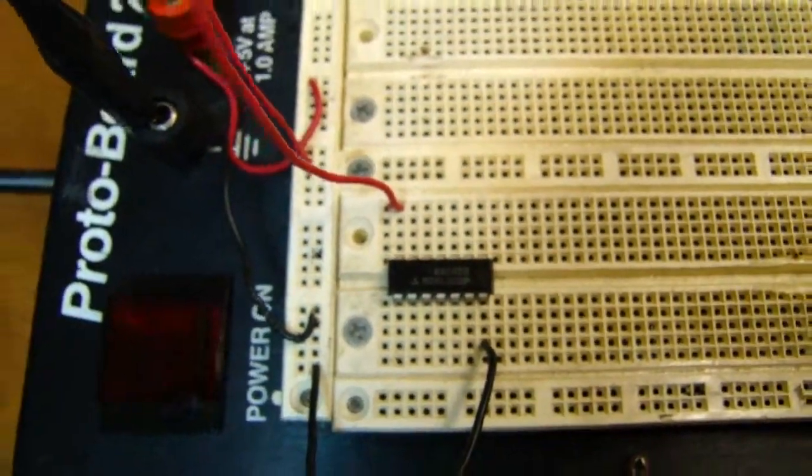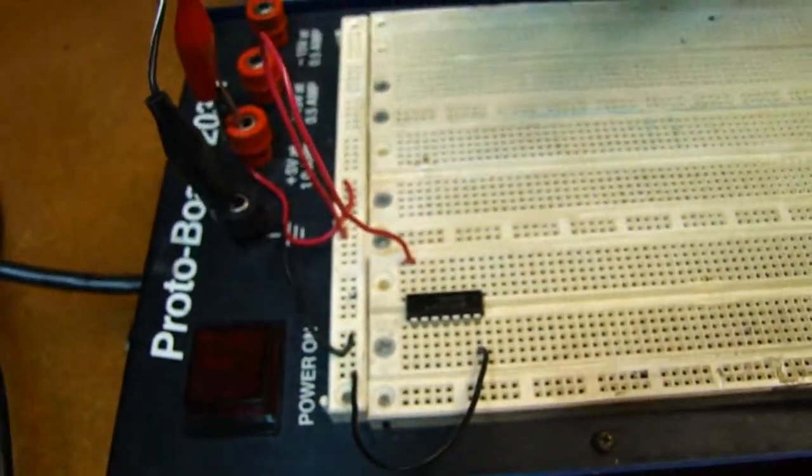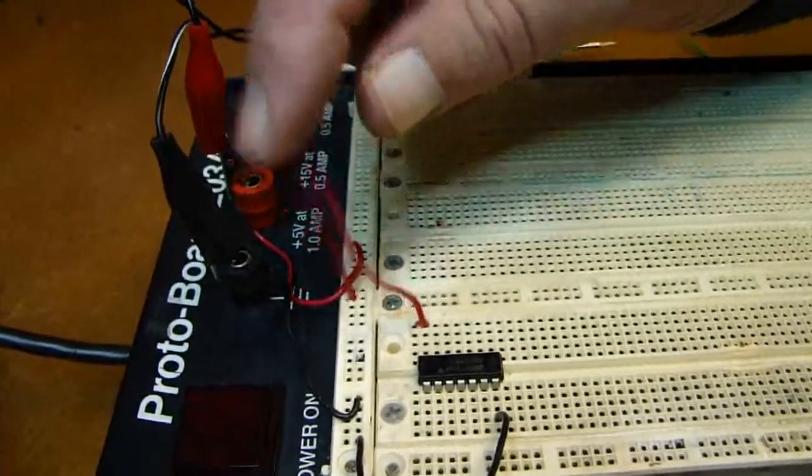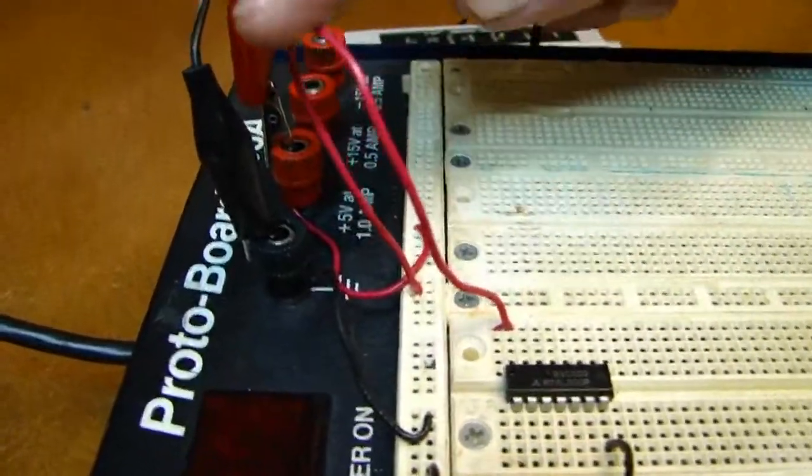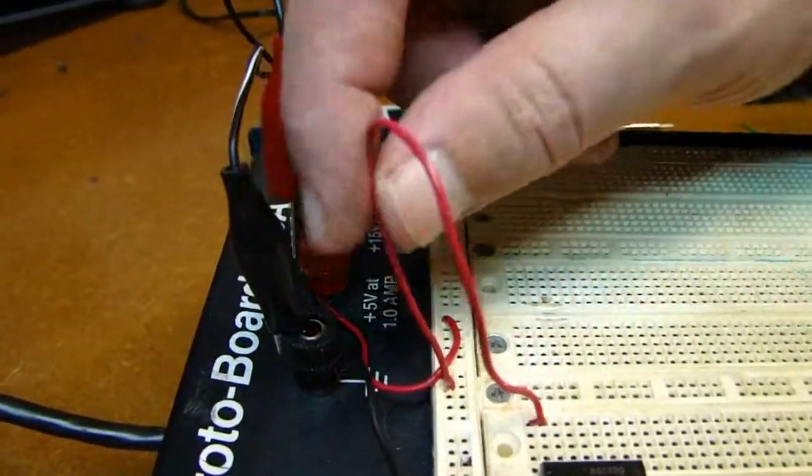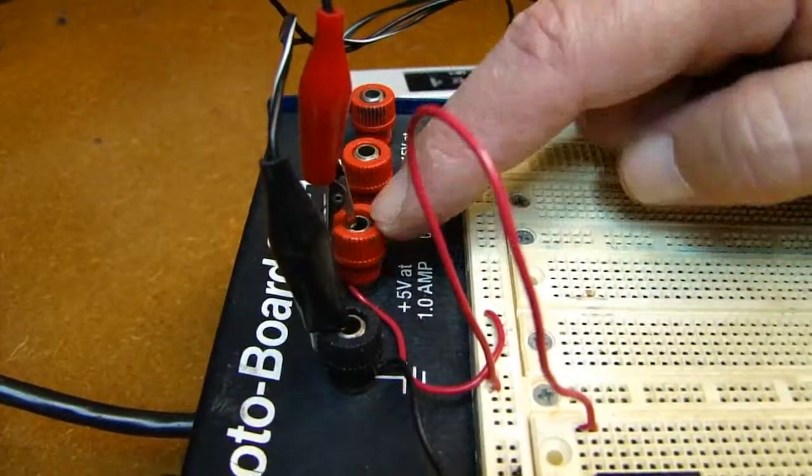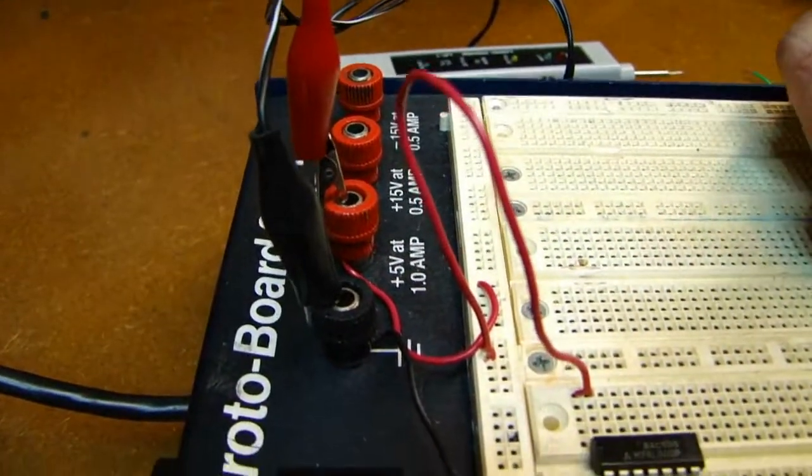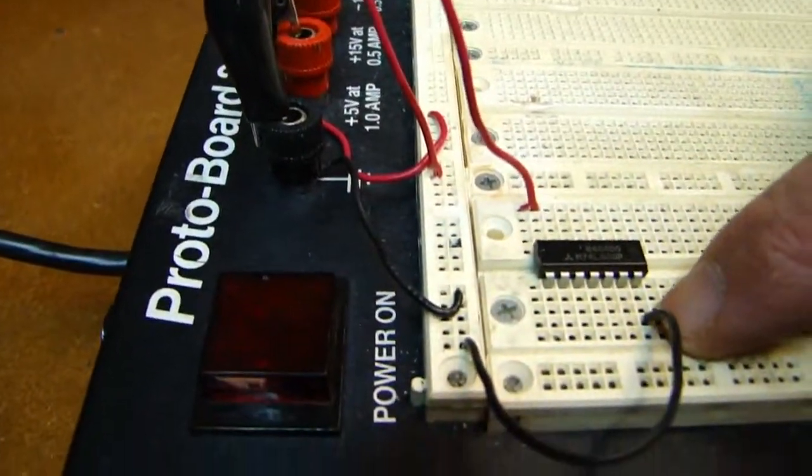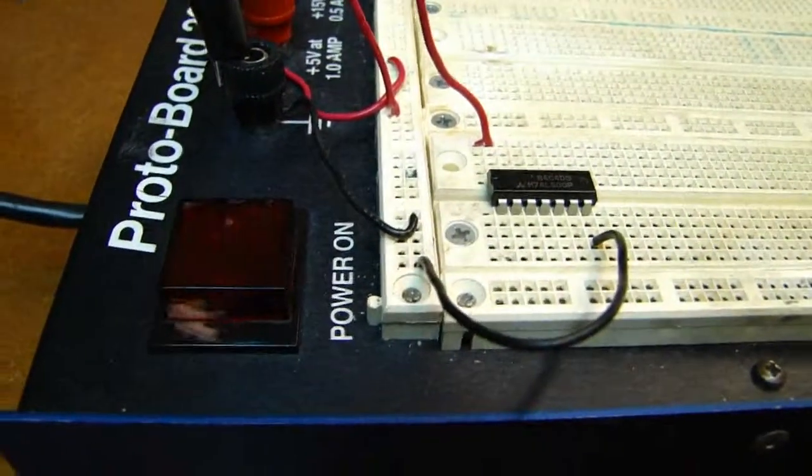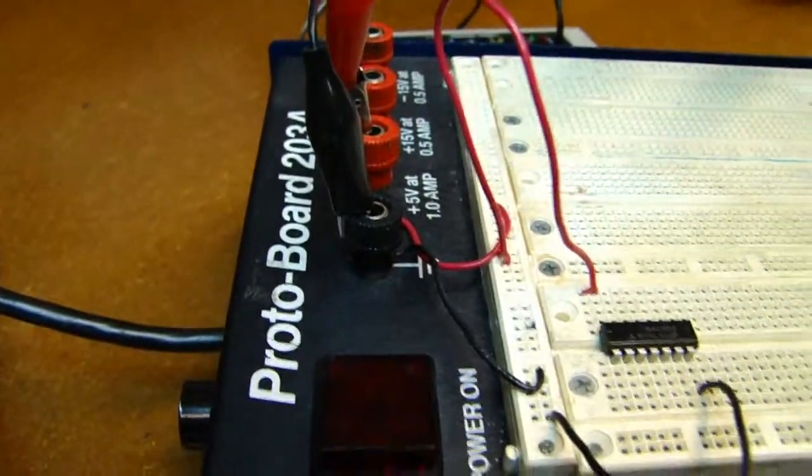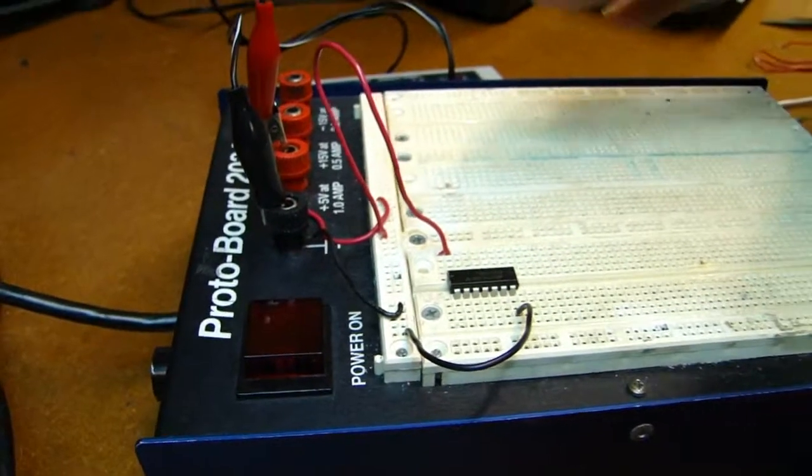Then the second thing I have to remember is to power up the IC. So as you see here, pin number fourteen is connected to five volts. Remember this is under five volt work. And the pin number seven is connected to ground. So now we are ready to be able to use the NAND gates.